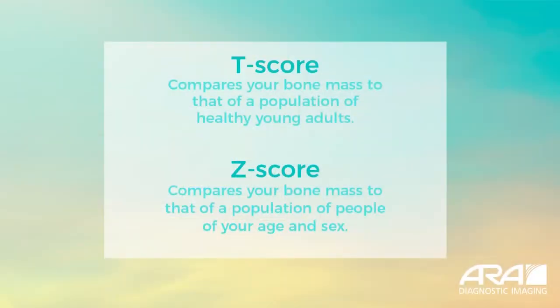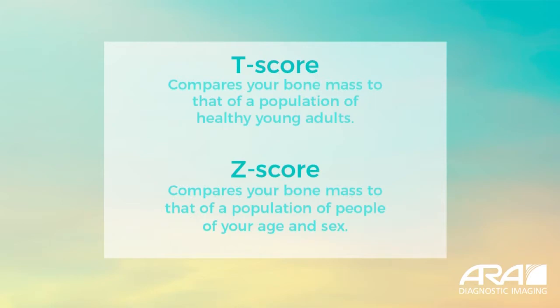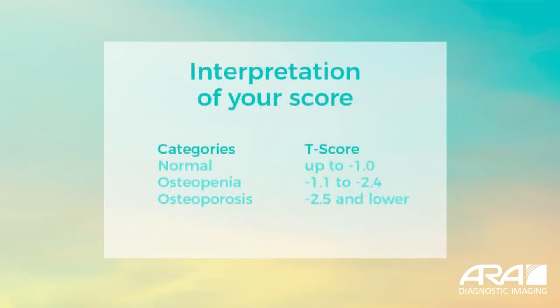Dr. Tharp, as we look at those results, what do we see from this particular exam? What I have here is Julia's lumbar spine image. Looking at her T-score — which compares you to a person of your height and weight who is 30 — that T-score is minus 3, which is greater than minus 2.5, so that puts her in the range of osteoporosis. The Z-score, which compares her to someone of her own age, is minus 1.6. Being in the osteoporosis range, I can compare that to her last exam from 2019, which shows a minus 11% change in bone mineral density — considered significant.